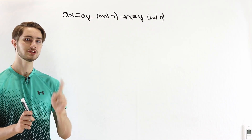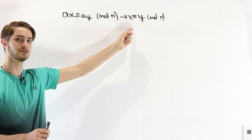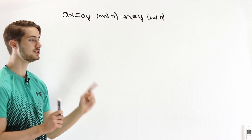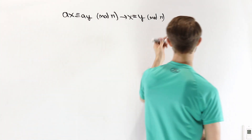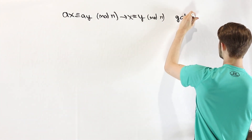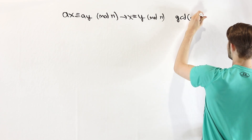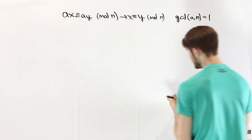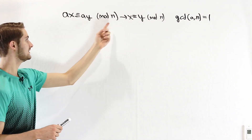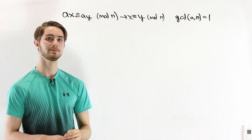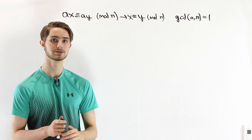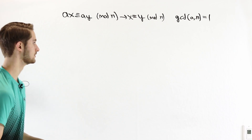However, there are some cases where we are able to do this cancellation. The condition is that the greatest common divisor of a and n must equal 1 — in other words, a and n must be relatively prime and share no prime factors.